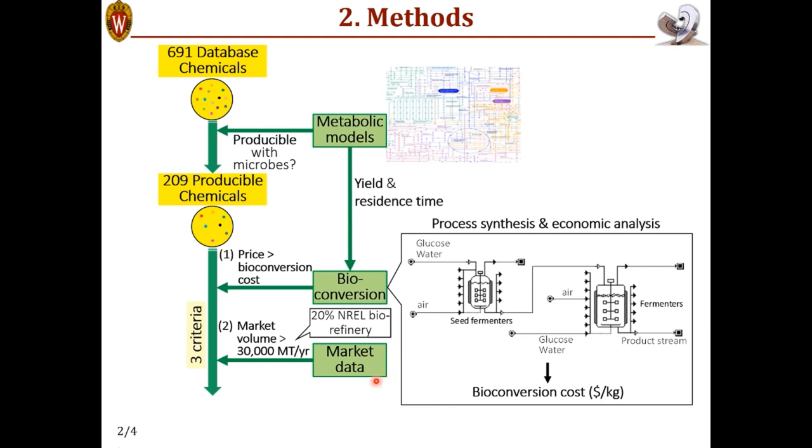The other two criteria are developed based on market data. This second criterion enforces a minimum market volume or demand because we do not want to build a tiny fermenter to serve a very small market. So in this example, we set the minimum threshold to be 20% of the biorefinery size proposed by NREL, National Renewable Energy Lab.